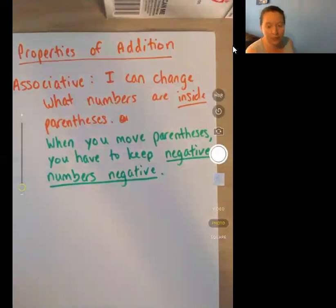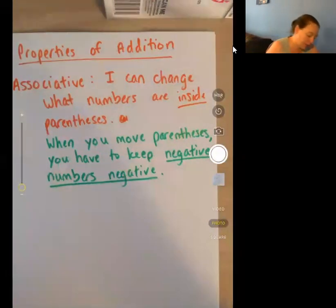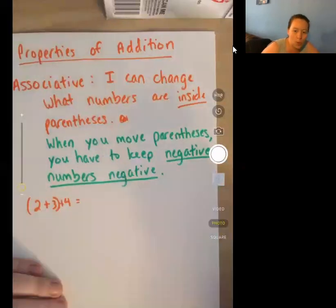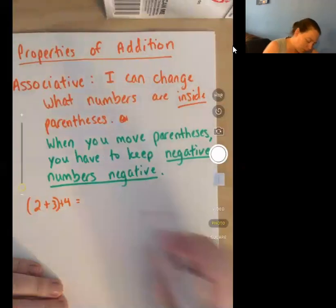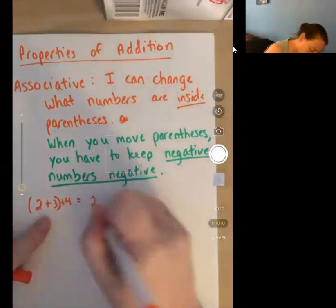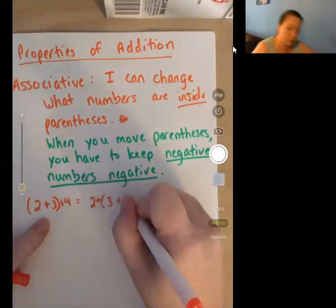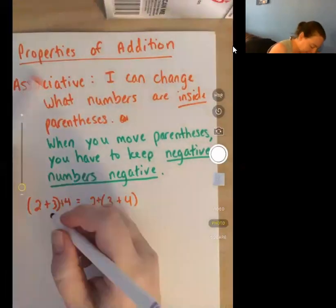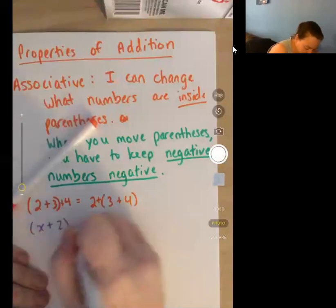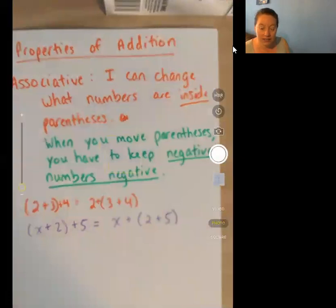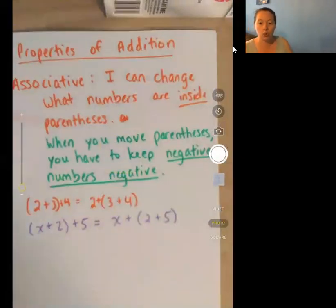So when we do our typical associative property, 2+3+4 is equal to 2+(3+4). All that we're doing is we're moving where the parentheses is. Or what we would be doing is (x+2)+5 is equal to x+(2+5). All I did was move where the parentheses were, I just changed who we were associating with.